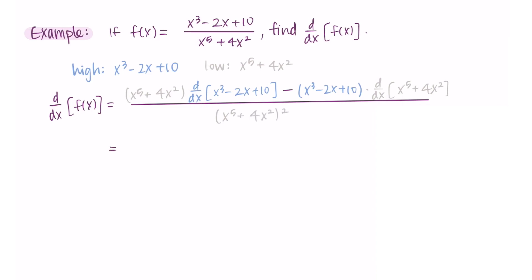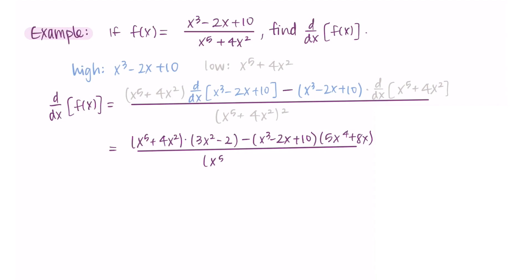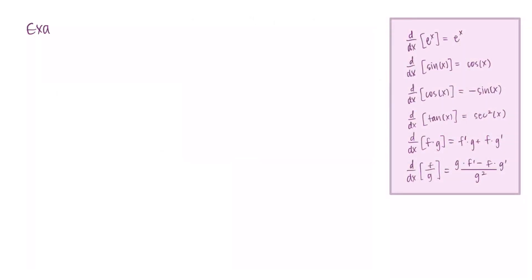Both derivatives just use the power rule. The derivative of the high function is 3x² − 2, and the derivative of the low function is 5x⁴ + 8x. I put those in, and in the denominator I leave the low function squared as written — I don't care to distribute it all out. Even though this looks messy, this is my derivative. We're not asked to do anything else, so quotient rule with a rational function isn't too bad.